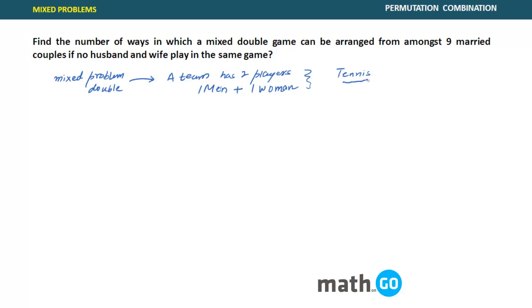So if people who have watched tennis, they will immediately get the question. You want a problem in which there is Team A versus Team B. Team A is composed of one man and one woman, and Team B is also composed of one man and one woman. This is how a mixed double match is played.